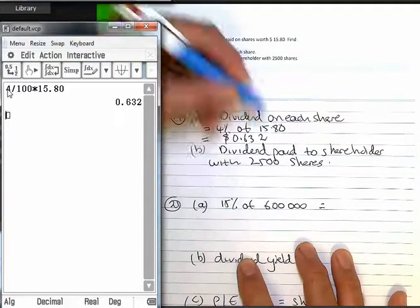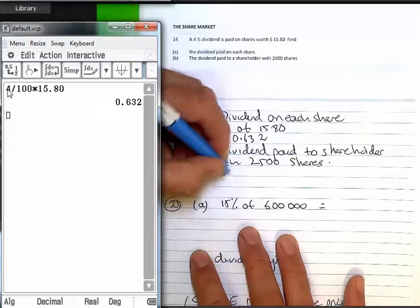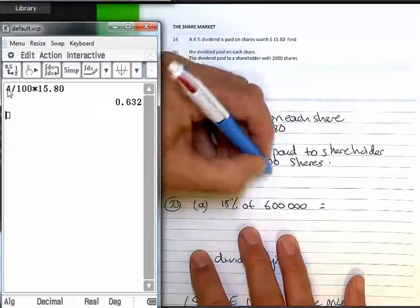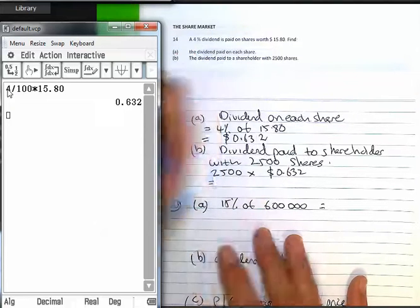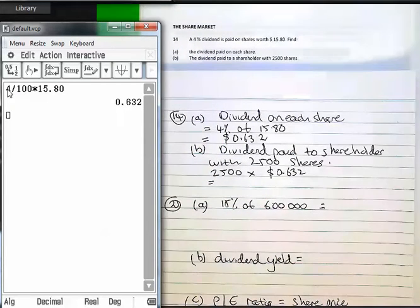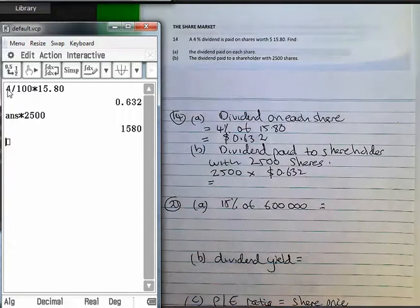We'll keep that two figures. We'll need it in the next bit. So in other words, someone who owns 2,500 shares earns the 0.632 per share, times the 2,500, and we end up with $1,580.